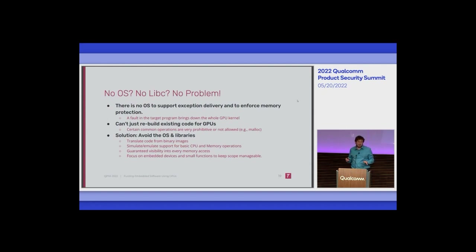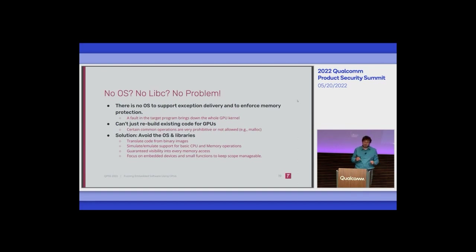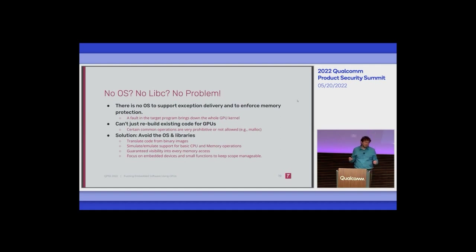There's also no OS and importantly no libc, and there's no memory protection. If you have a fault in your target, you'll bring down the whole GPU kernel and your fuzzing run ends — you won't get a signal notifying you, it just terminates everything. We can't take an existing target and rebuild it with Clang's PTX backend because certain operations just don't exist. Our solution is to avoid the OS and libraries and translate the binary image directly.